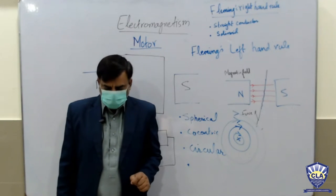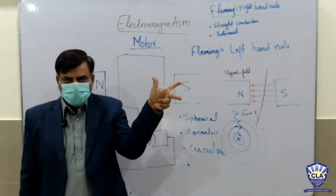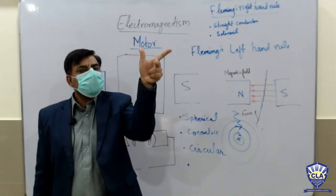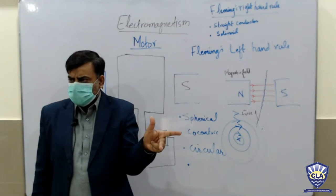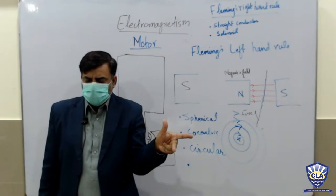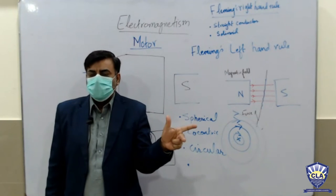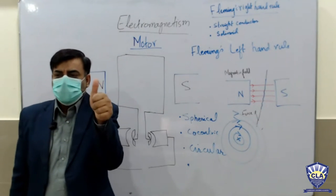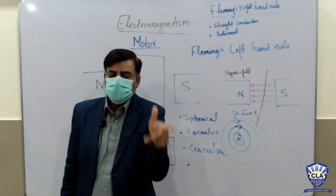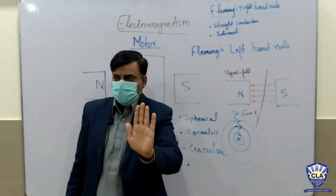Another student refines: we have three fingers — thumb, forefinger, and middle finger. We point them to indicate motion (force), magnetic field, and current direction respectively. The teacher clarifies: motion means force in this context, so don't confuse the terms — it will create errors.